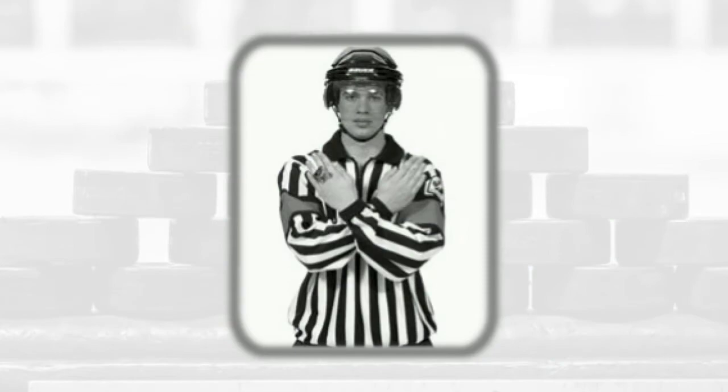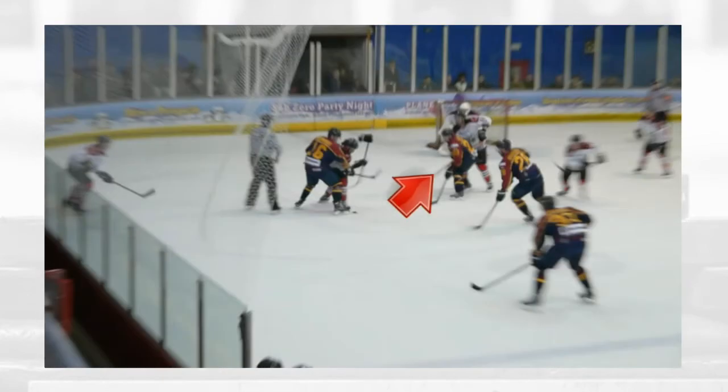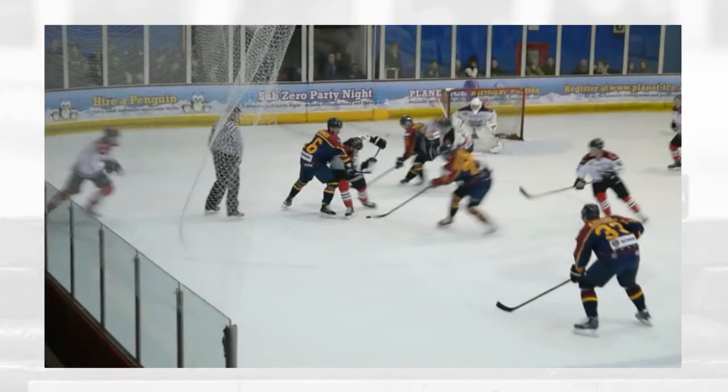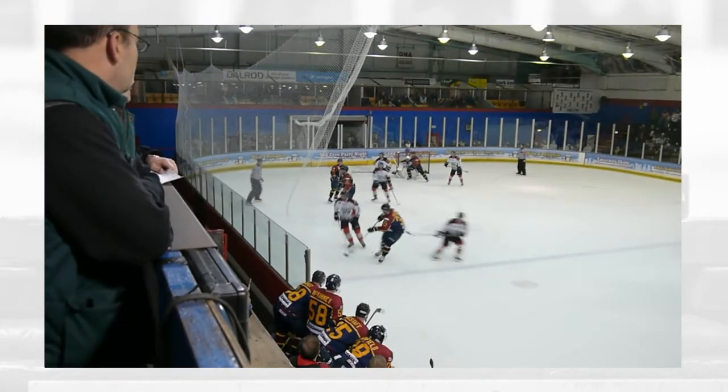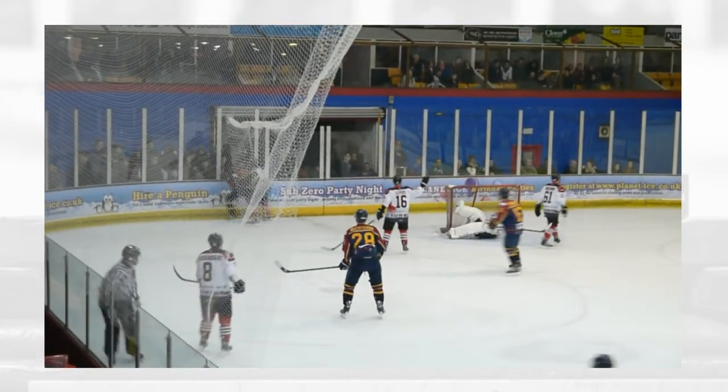Let's take a look at another example. Here we see the attacking player, number 23, goes from the face off to the net. Once in front of the goalie, he makes contact, knocking the goalie over. A minor penalty is called for goalie interference.